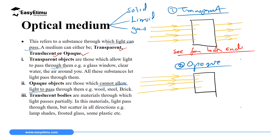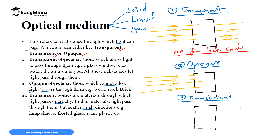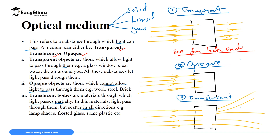The last category is translucent optical medium. These are materials through which light passes only partially. When light passes through them partially, it gets scattered in all different directions. So if you allow four rays of light to come in contact with a translucent material, the light will be scattered in different directions and will not go in one direction.